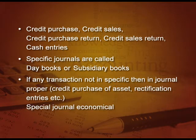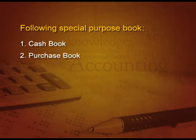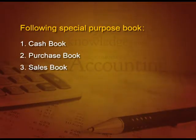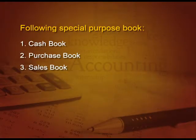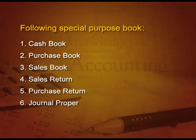Now these special journals are very economical. How many types of special purpose books are there? First, cash book, which records all the cash entries. Then purchase book, which records all the credit purchase entries. Then sales book, which records all the credit sales entries. Then sales return, credit sales return, purchase return.